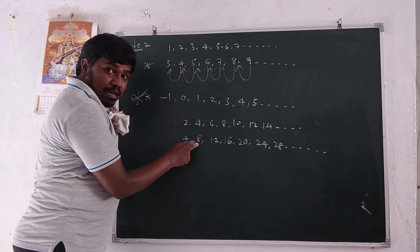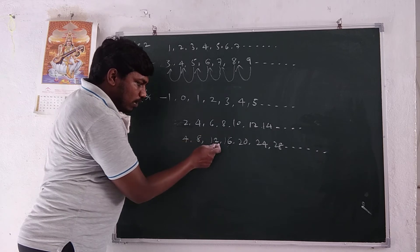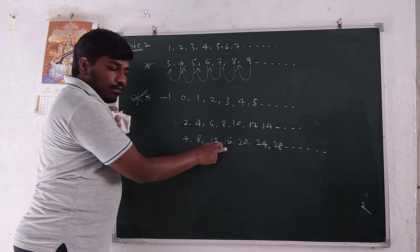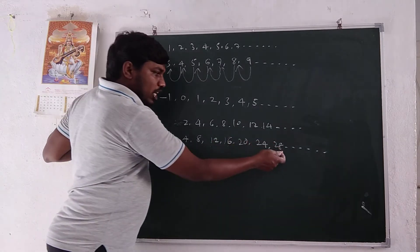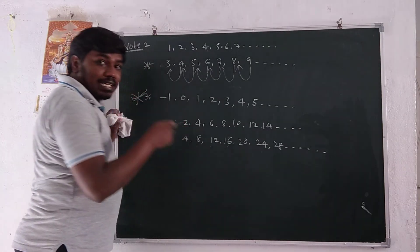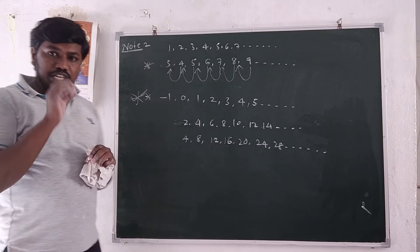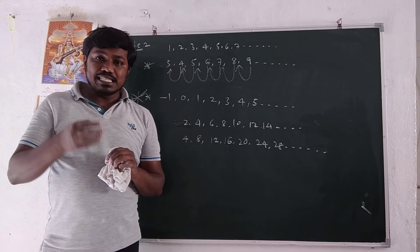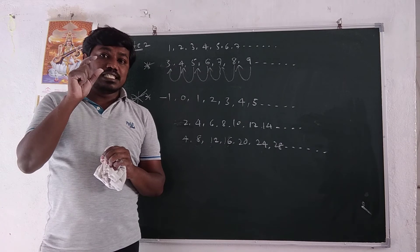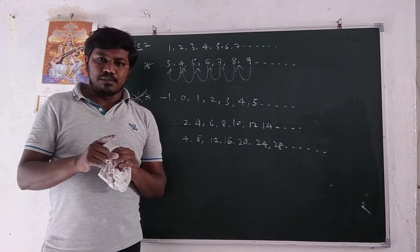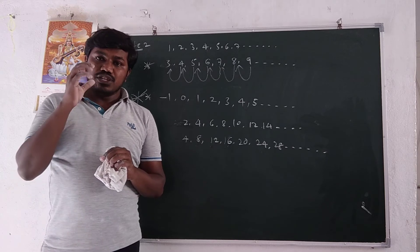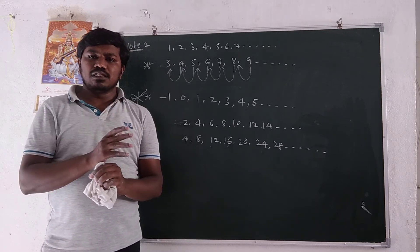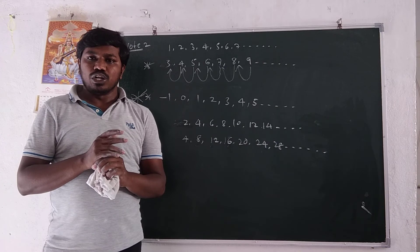Check if the resulting sequence 4, 8, 12, 16, 20, 24, 28 is in AP: 8 minus 4 is 4, 12 minus 8 is 4, 16 minus 12 is 4, 20 minus 16 is 4, 24 minus 20 is 4, 28 minus 24 is 4. Yes, the resulting sequence is also in AP. So each term of an AP is multiplied by a non-zero number — either positive or negative — and the resulting sequence is also an arithmetic progression.